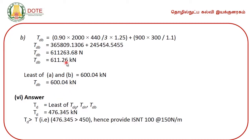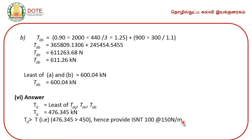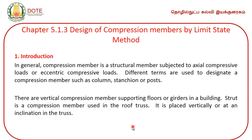The design tensile strength of the member is the least of all three conditions: 476.35 kilo Newton. The design tensile load given in the problem is 450 kilo Newton. Since the design tensile strength of the selected member (476.35 kilo Newton) is greater than the design tensile load (450 kilo Newton), the section is safe. Hence we provide ISNT 100 at 150 Newton per meter.